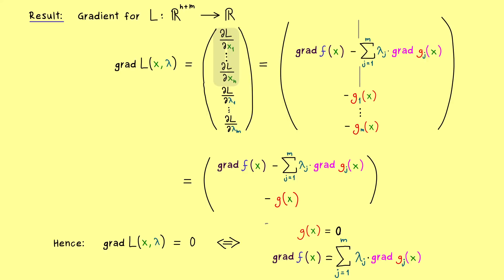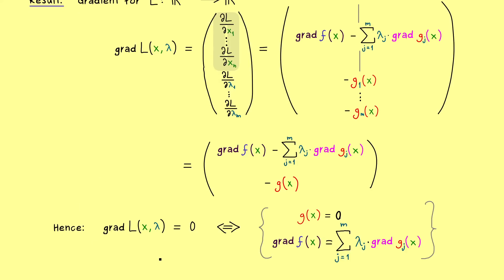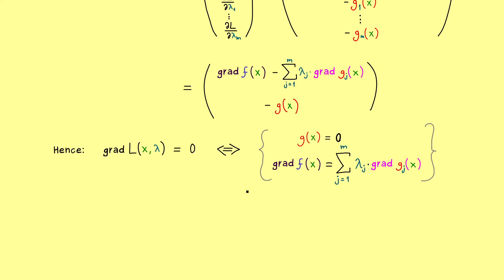And I would say, the left hand side here is much easier to remember, because it looks exactly like we know it for finding extrema in the normal way. This means, if we have constraints, we do the same thing as always, meaning we set the gradient to zero and search for solutions. However, in the case of constraints, we do it for the Lagrange instead of doing it for the function f.